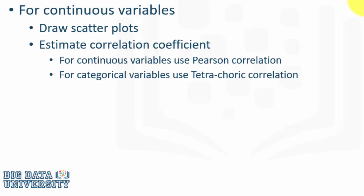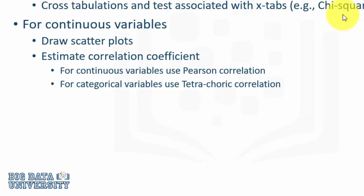You can also estimate a correlation coefficient. If there are continuous variables, we can use Pearson correlation, and if there are categorical variables, we can use tetrachoric correlation.